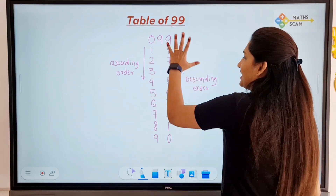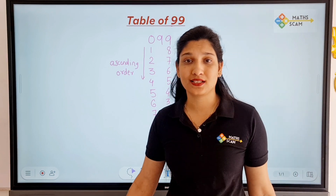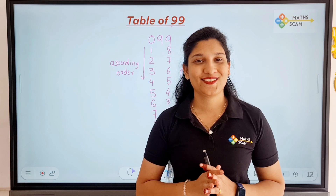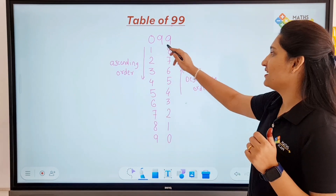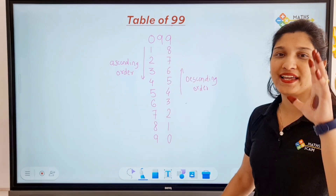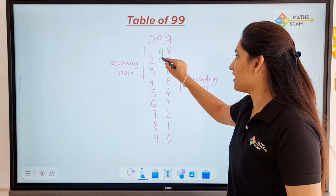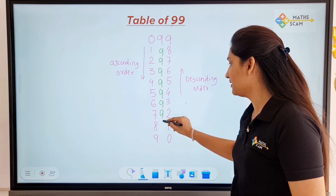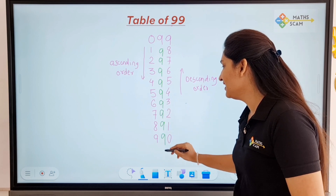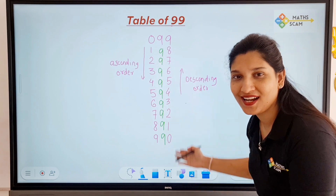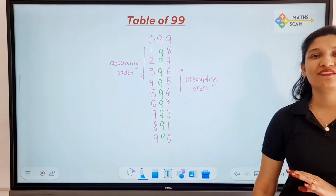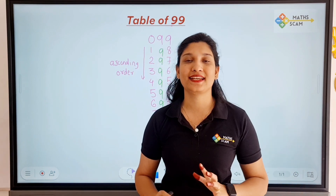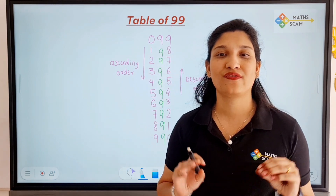So what did we write? Ascending and descending. Now what goes in the tens place? We wrote ascending, we wrote descending — very easy. Repeat the same number 9 throughout: 9, 9, 9, 9, 9, 9, 9, 9, 9, 9. And this is your table of 99! First write ascending, then the same number 9 in the tens place, then descending — that gives you the complete table of 99.